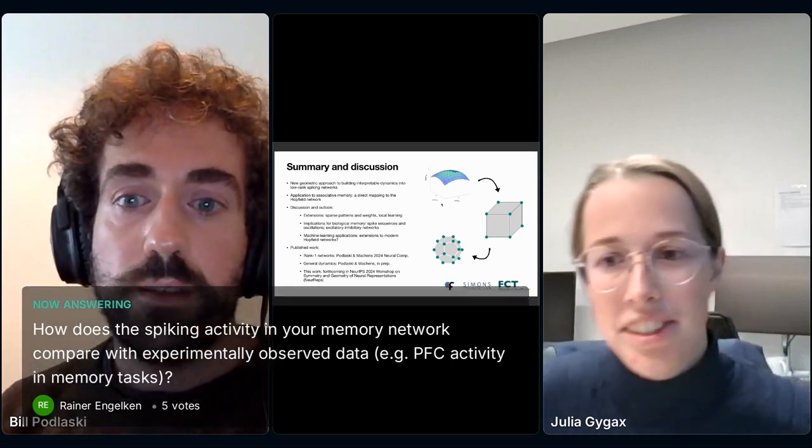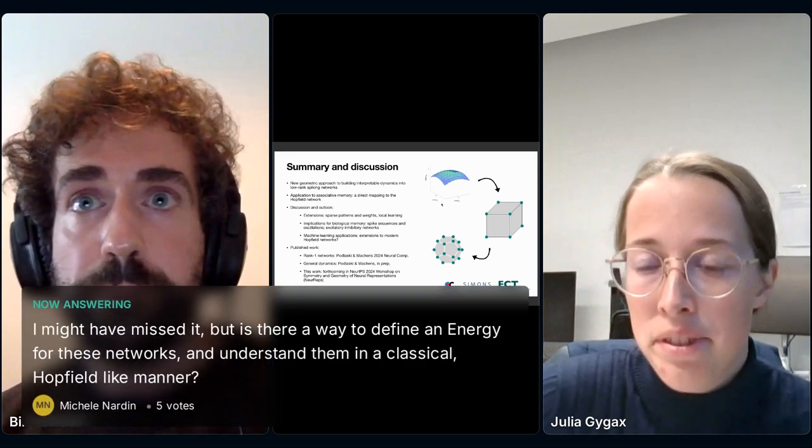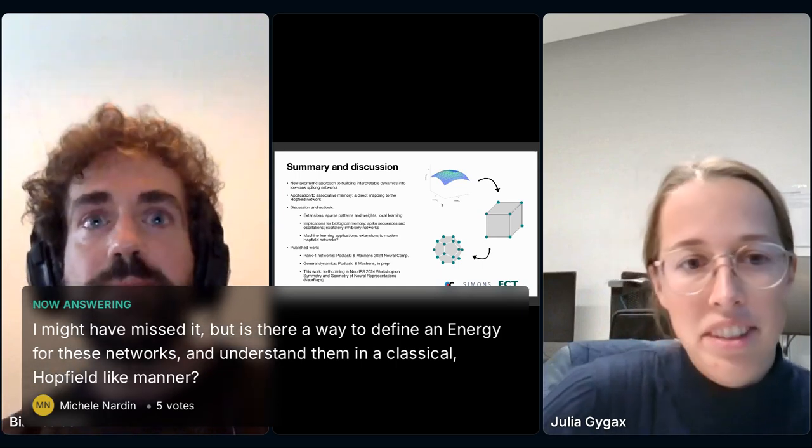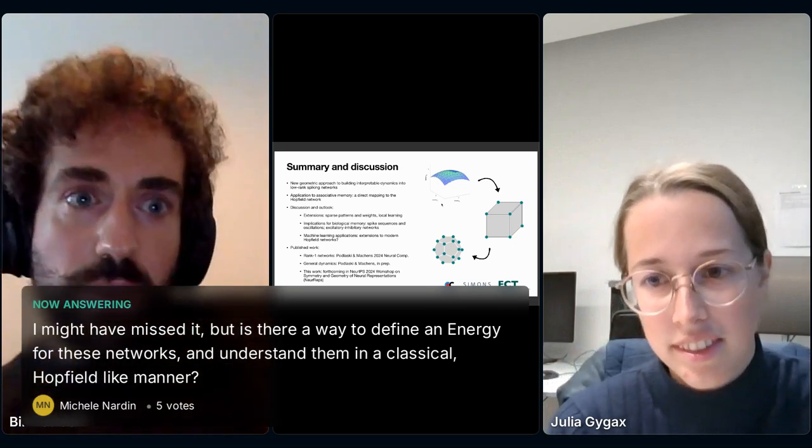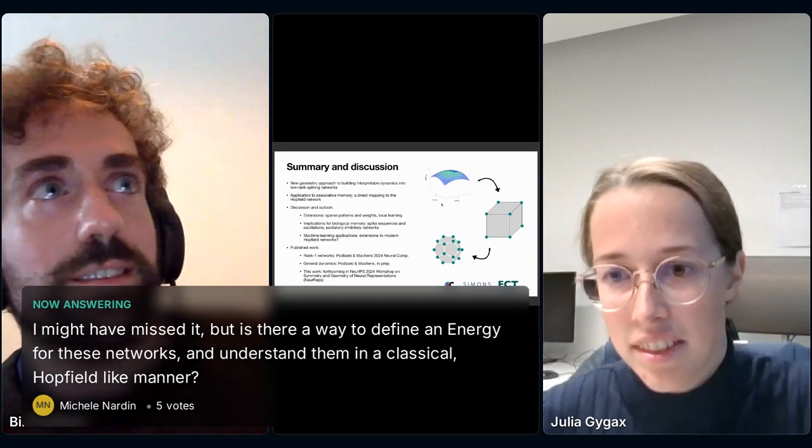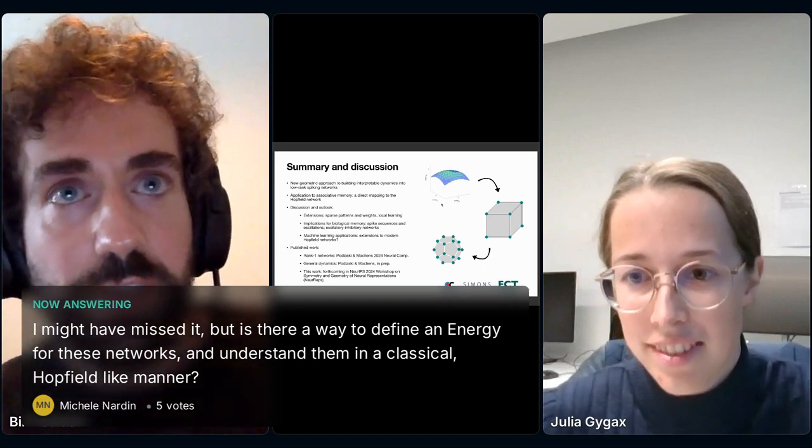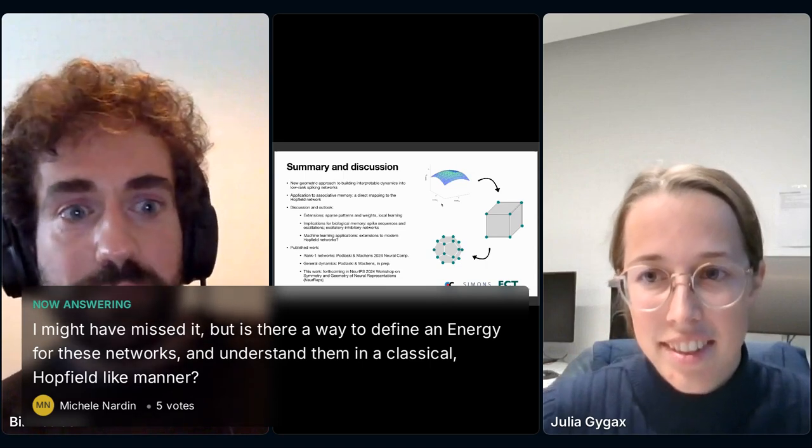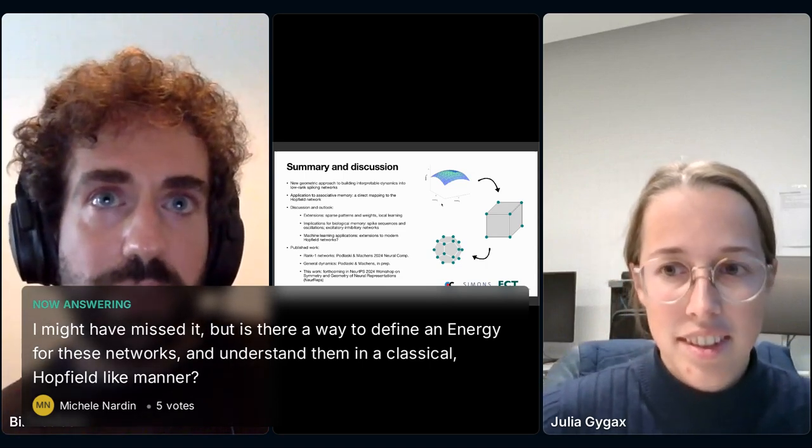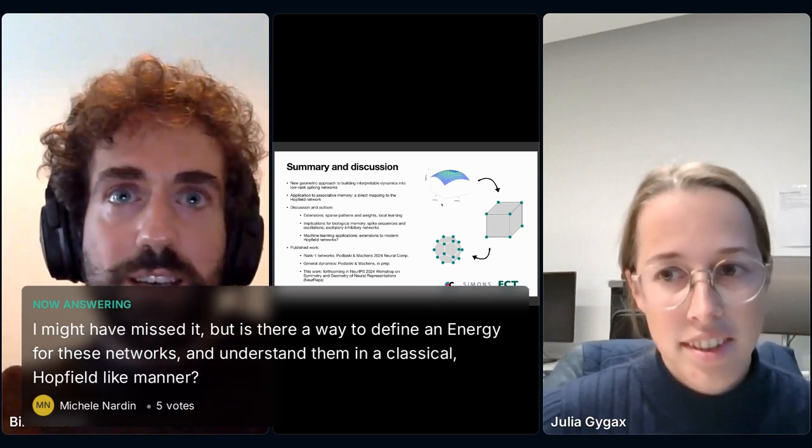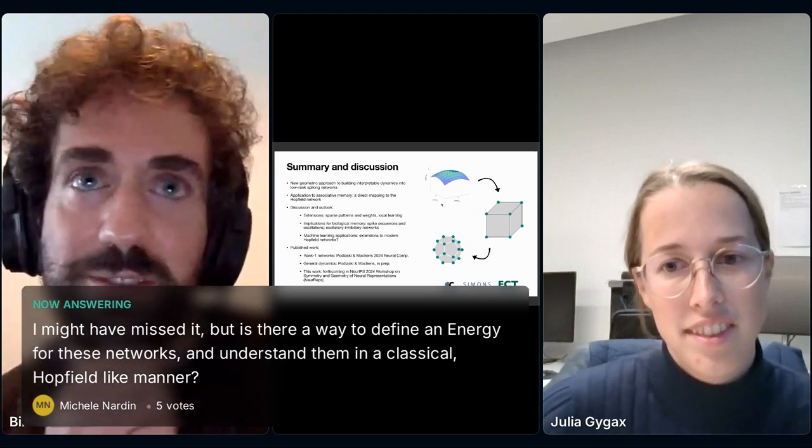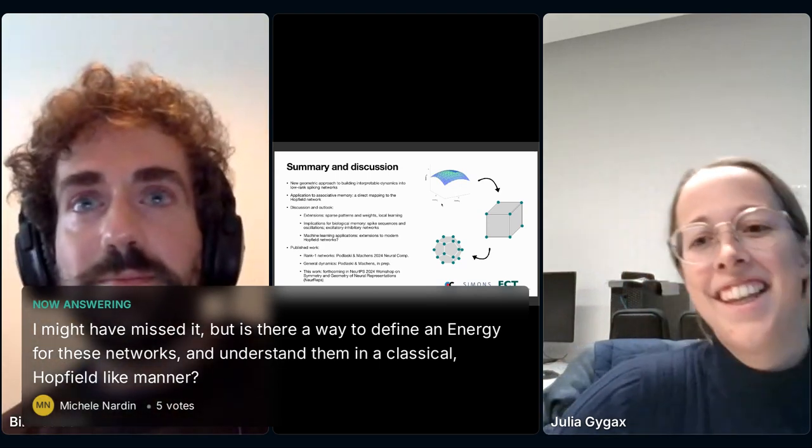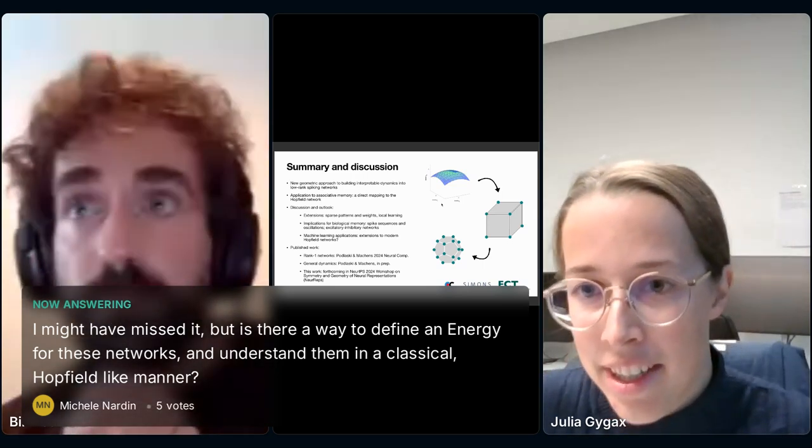Let's go to the next question from Michel Nardin. I might have missed it, but is there a way to define an energy for these networks and understand them in a classical Hopfield-like manner? Good question. I don't know for sure. I mean, for the symmetric case there probably is, but I think the fact that they're spiking means that the activity is variable over time. So it probably only makes sense to think about it in more of an average energy. But I think it's a very nice question that we should probably explore.